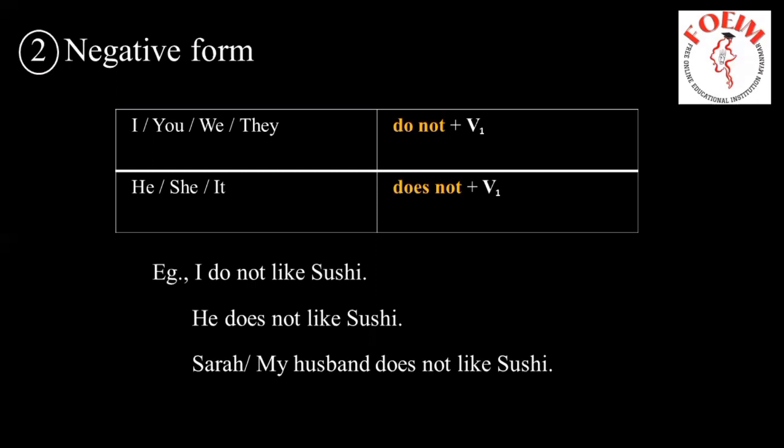So for I, you, we, they, he, she, it — we use 'do not' or 'does not' plus the base form. For example: I do not like sushi. He does not like sushi. Sarah does not like sushi.